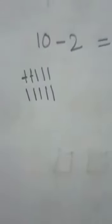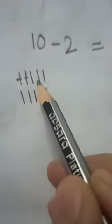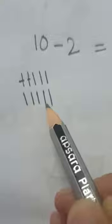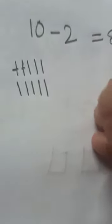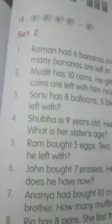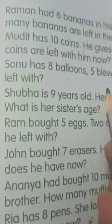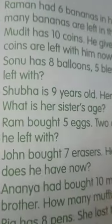So how many are we left with? One, two, three, four, five, six, seven, eight. In the same way you have to read the questions carefully and do the subtraction.